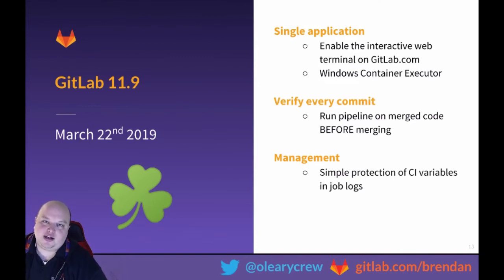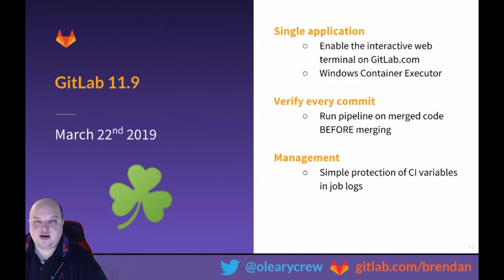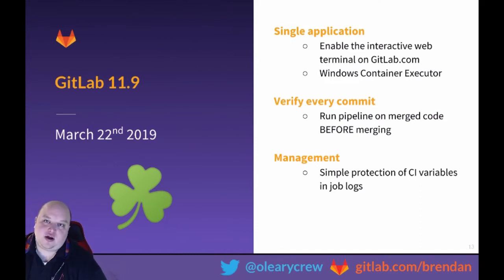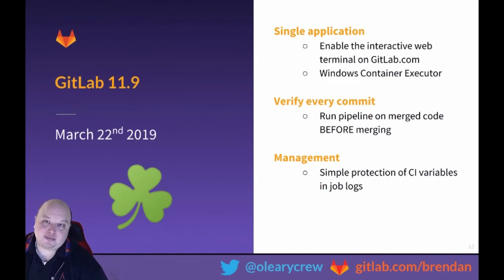Another big change is the Windows Container Executor. For a long time we've had the ability to run a shell executor on Windows machines for people making builds on Windows, but this will allow first-class support for Docker on Windows. Additionally, verifying every commit is crucial. Today, pipelines run on a branch-by-branch basis and then only after merging into master. What we're bringing is the ability to run a pipeline on the merged code result before you actually merge the code — this will ensure master stays green. We're also bringing simple protection of CI variables in job logs, which will obfuscate any CI variables that may be accidentally or intentionally echoed into the logs.